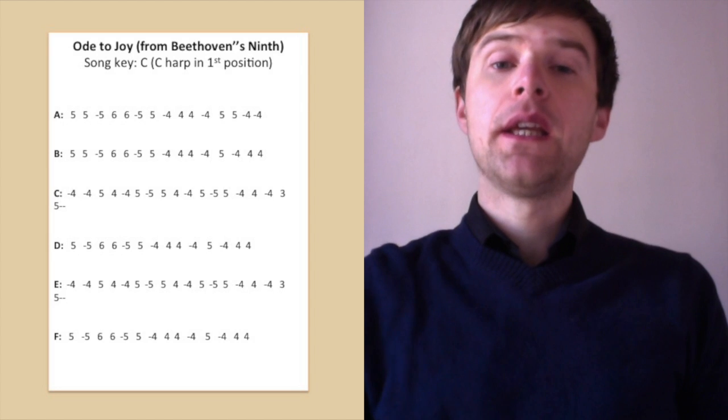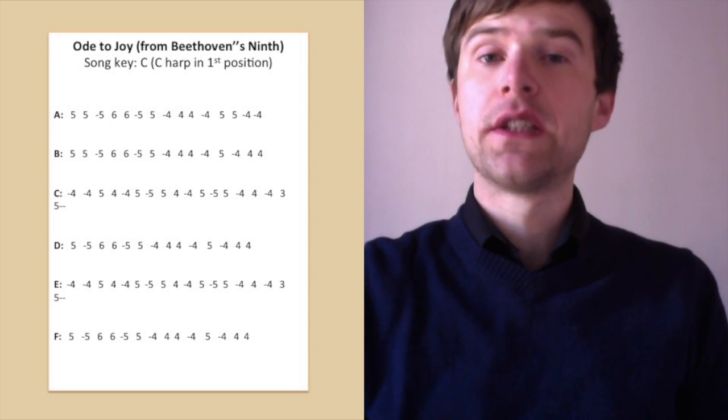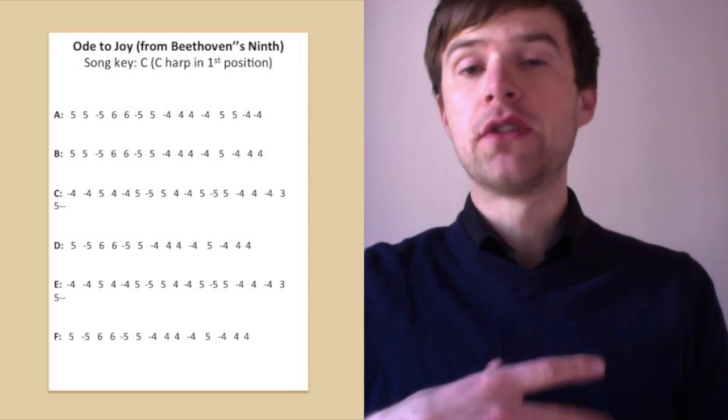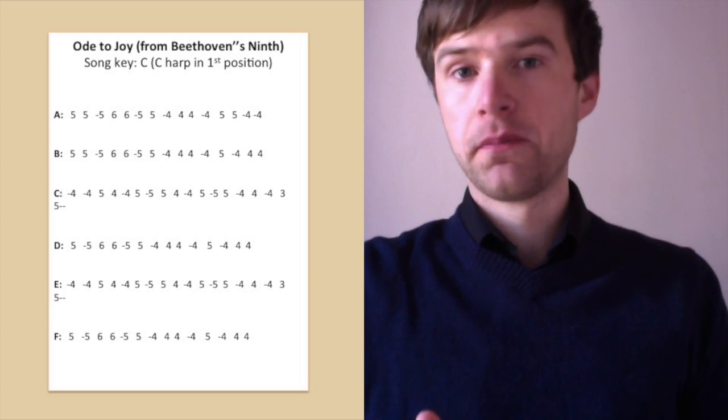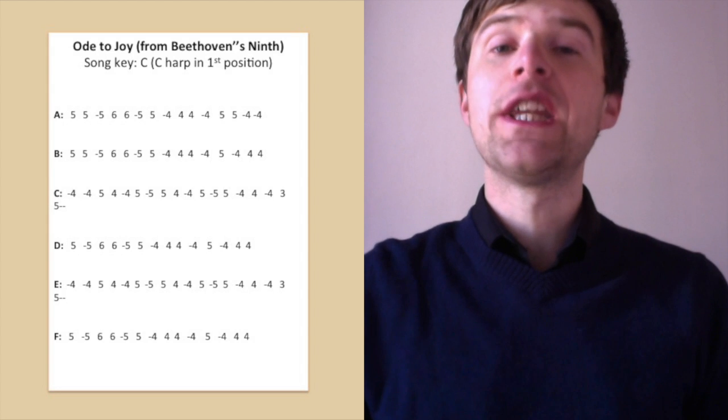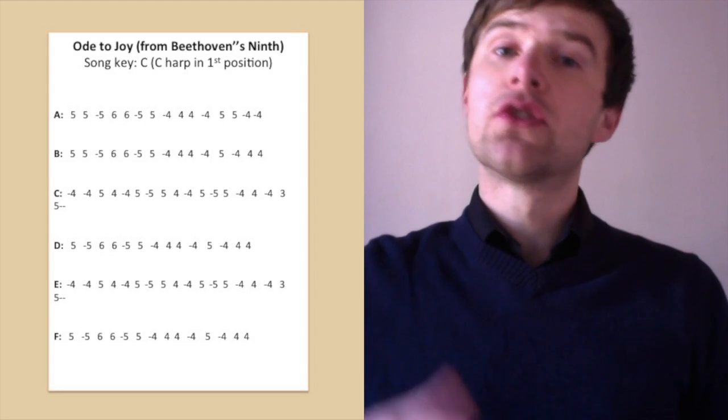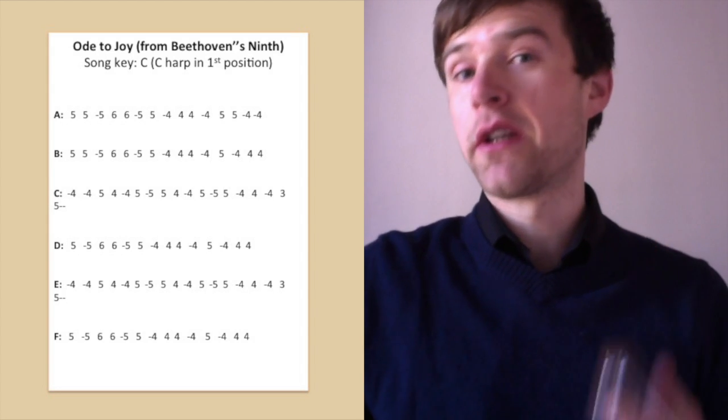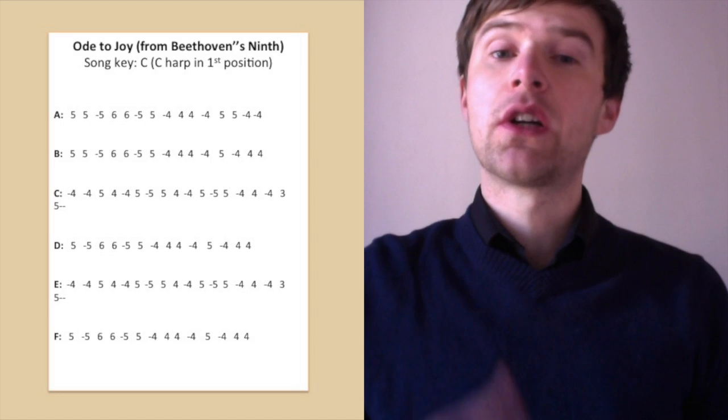Now line B is similar. The start of the line is similar, but then it does change near the end of the line because this line sort of resolves, by which I mean it goes back to the C note. It finishes on the C. We're playing in the key of C on the C harmonica. It goes back to the C, which in our case is a four blow.